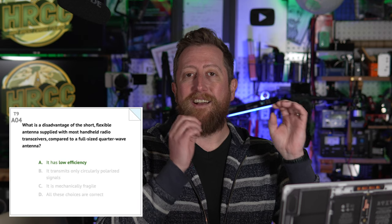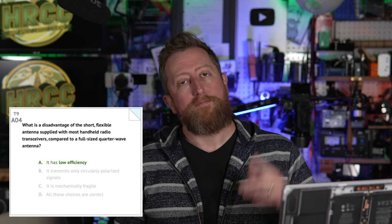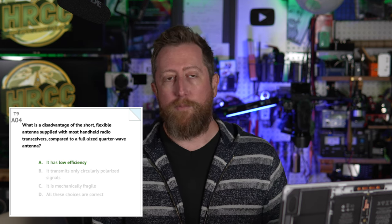Alpha 04: What is a disadvantage of the short flexible antenna supplied with most handheld ham radio transceivers compared to a full-sized quarter wave antenna? These are rubber duck antennas — the stubby antennas that come on most handhelds. They have low efficiency. Upgrading your antenna is always one of the first things you should do on a handheld radio. Check out the Signal Stuff Signal Stick in the description — the proceeds from that antenna support hamstudy.org, and it's a well-priced, good performer.